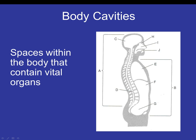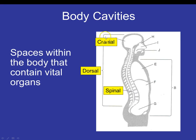Next we'll talk about body cavities — spaces within the body that contain vital organs. First, we have the dorsal cavity, which means towards the back. The dorsal cavity contains the cranial cavity, which contains the brain, and the spinal cavity, which contains the spine. Both are located within the dorsal cavity because they're on the back side of the body.